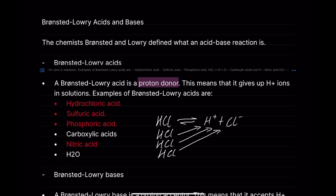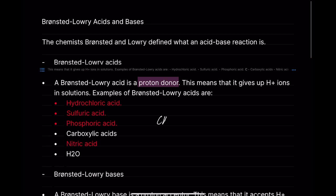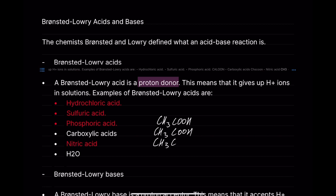Carboxylic acids are weak acids, so they don't fully dissociate H+ ions in solution. Using ethanoic acid — CH3COOH — as an example: the hydrogen that gets dissociated is on the acidic hydroxide. The hydroxide on a carboxylic acid is an acidic hydroxide, which is why on an infrared spectrum there are two different types of hydroxides — the alcohol hydroxide and an acidic hydroxide.